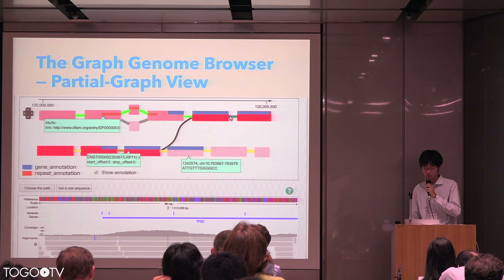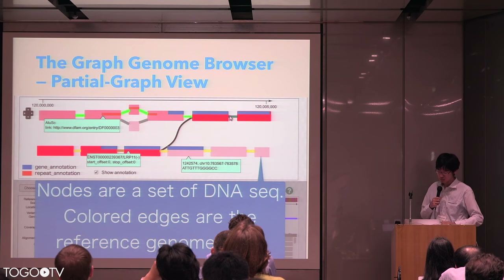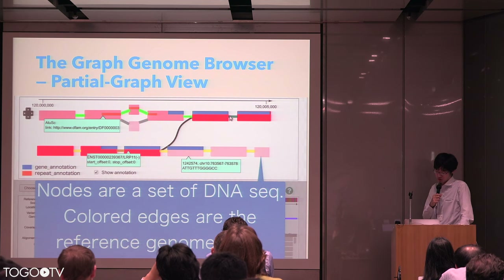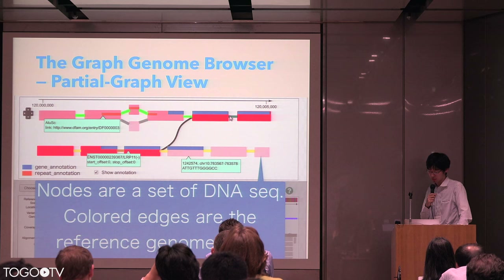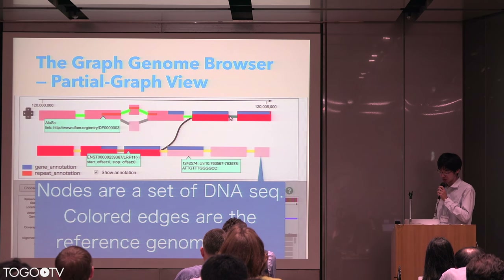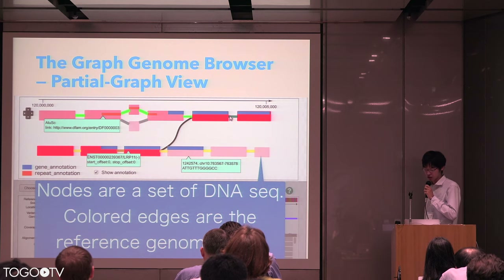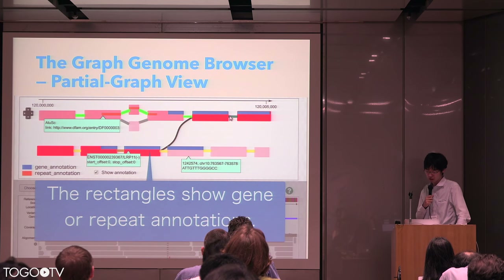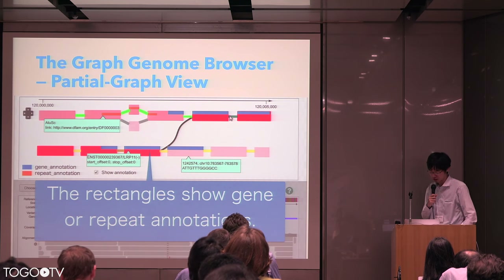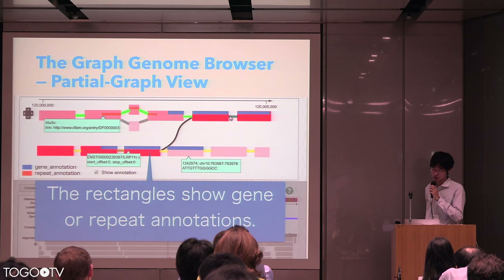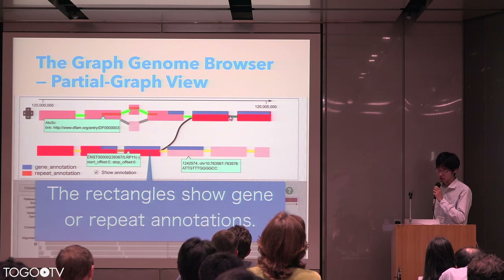This is the lower half: the partial graph view and line-up view. The partial graph view shows the topological information and major attributes of the graph genome. Nodes are a set of DNA sequences, and colored edges mean the path of the reference genome. The color corresponds to each chromosome. The anchored edge indicates variation. In this example, the black edge indicates translocation, and the two gray edges mean SNPs. Node color shows the mapping coverage — the deeper the color of nodes, the higher the mapping coverage. Moreover, rectangles on the nodes mean gene or repeat annotations. In this example, the blue rectangle means gene annotation, and orange means repeats. So, the partial graph view enables you to grasp the biological status of the node.